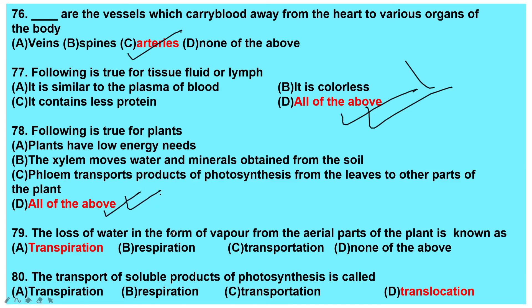The loss of water in the form of vapor from the aerial parts of the plant is known as transpiration. The transport of soluble products of photosynthesis is called translocation — the food material prepared during photosynthesis is carried to each and every part of the plant.